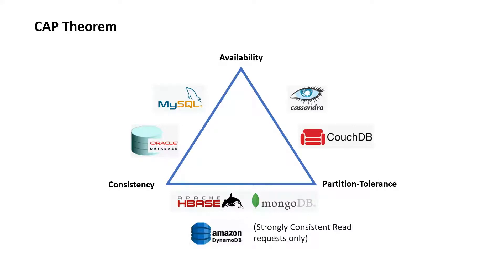In this video I'm going to talk about CAP theorem, which is used in system design to decide which database to use for a given set of requirements. CAP theorem is also known as Brewer's theorem, named after computer scientist Eric Brewer. The C stands for consistency — do we get back what we just wrote to the database right away? A stands for availability — do we have any single points of failure that can go down? And P stands for partition tolerance — can we horizontally scale the system easily?